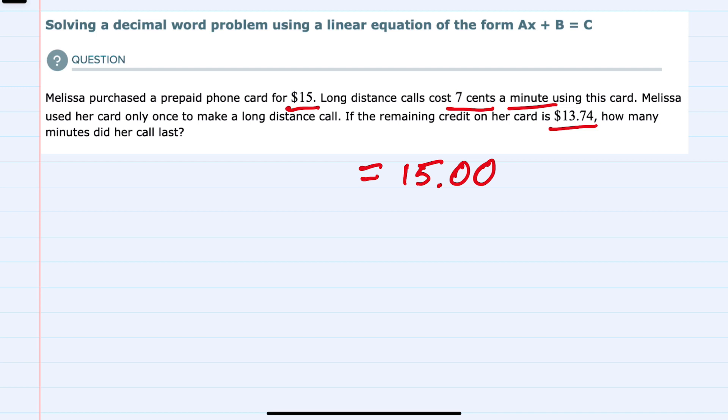The amount that was spent was per minute, so seven cents per minute—that's going to be our ax portion.